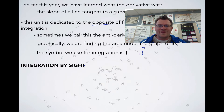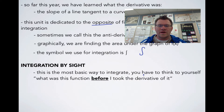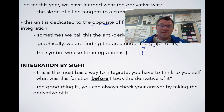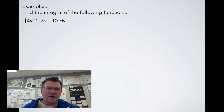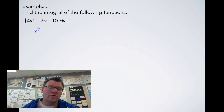Our first method is integration by sight, just by looking at it. This is the most basic way to integrate. You have to think to yourself: what was this function before I took the derivative of it? And the good thing is you can always check your answer by taking the derivative of it. For example, the integral of 4x³ + 6x - 10: we need to think, what was 4x³ before it became 4x³? Using the power rule, the exponent should be x to the fourth, because when we take the derivative of x⁴, we get 4x³.